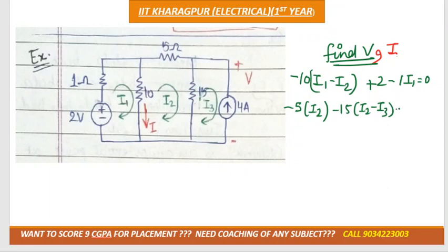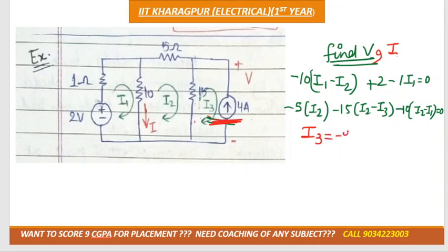...minus I3 minus 10(I2 minus I1) is equal to zero. For the third mesh, as you can see, there is a current source, so the equation comes directly from the current source. I3 and 4 amperes are in opposite directions, so I3 is equal to minus 4 amperes. This is the third equation.